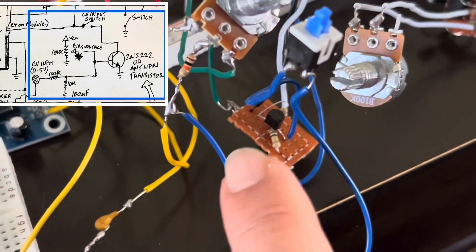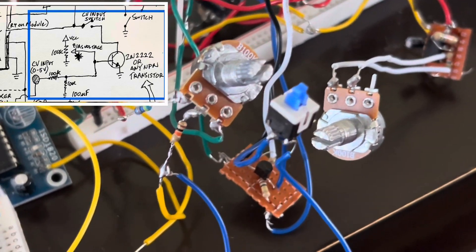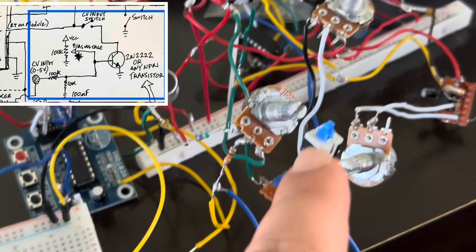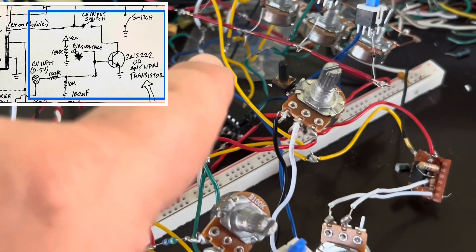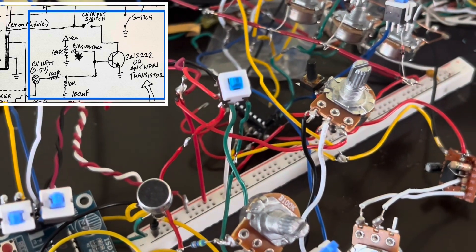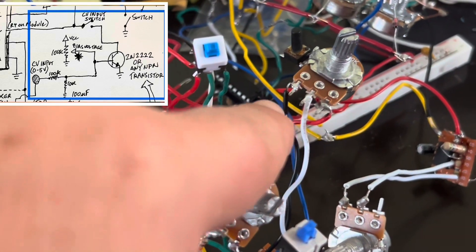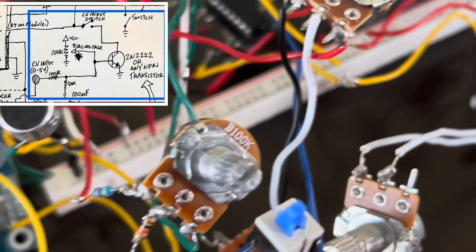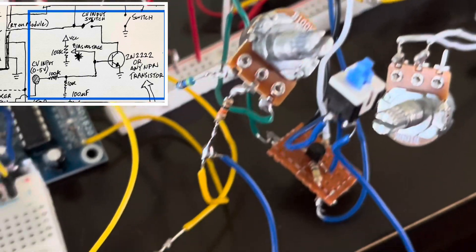This right here is our little transistor that goes to ground for the control voltage. This switch allows for control voltage to go in or you could turn it off. And so it just goes from the regular one, which is the regular potentiometer from the original circuit, which is a voltage divider with 470 kilo ohms.